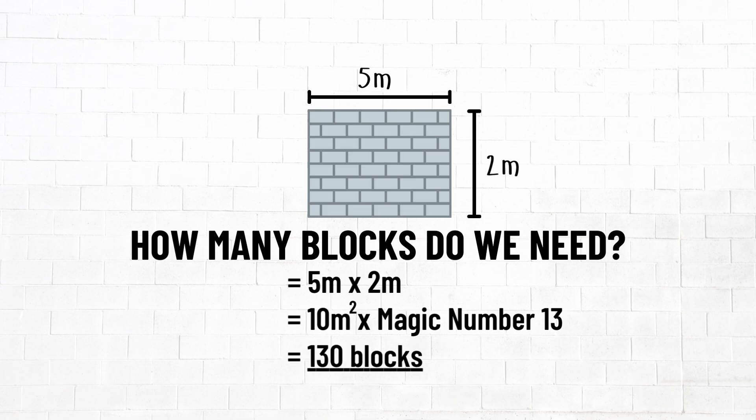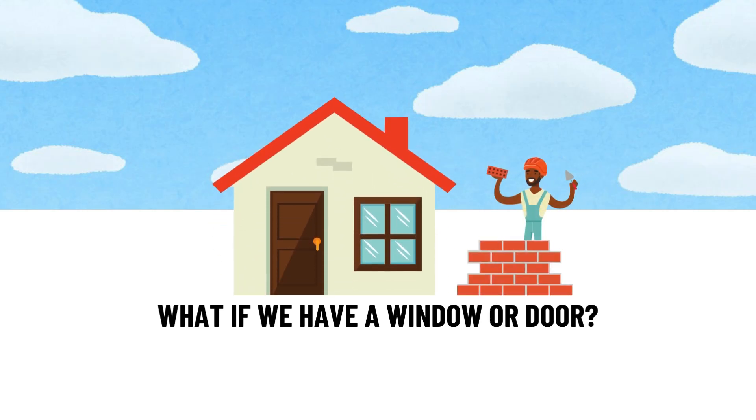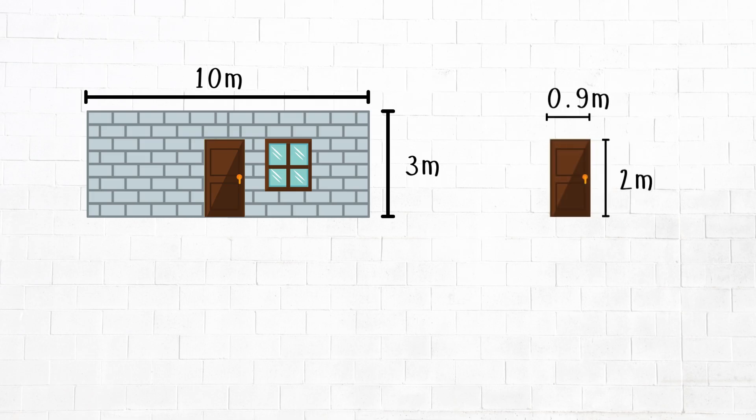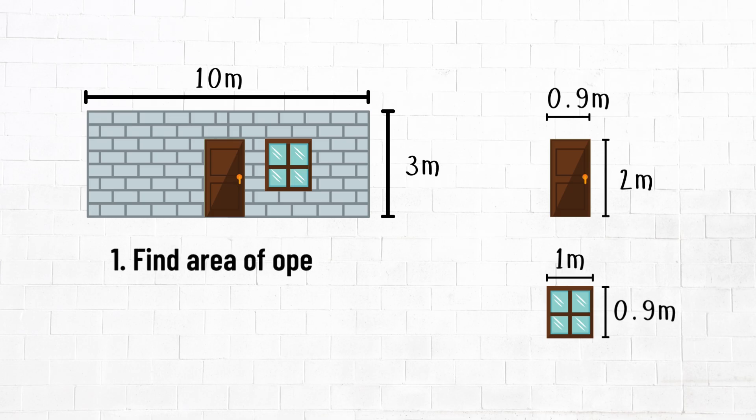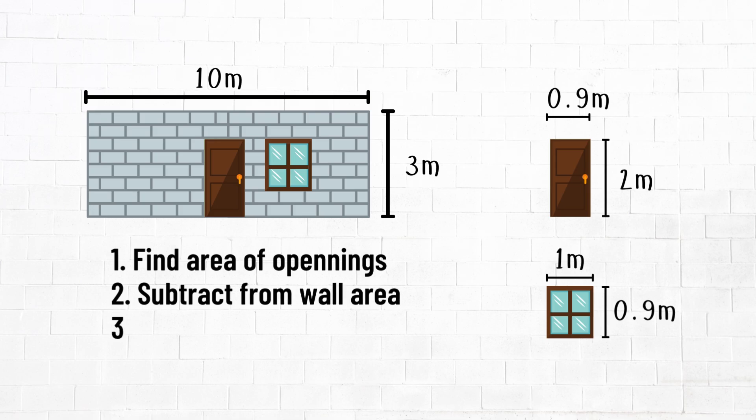But what if we have a window or a door? Suppose we have a door that's 0.9 meters wide and 2 meters tall, and a window that is 1 meter wide and 0.9 meters tall. All we need to do is calculate the area of the door and the window, then subtract these areas from the overall area of the wall, then multiply the answer by our magic number 13.